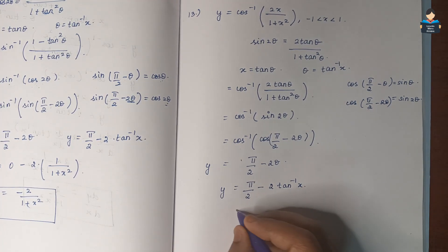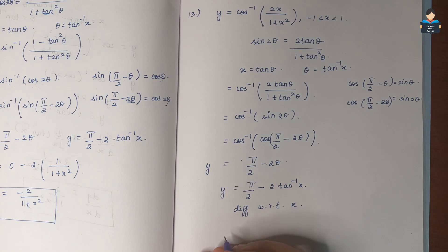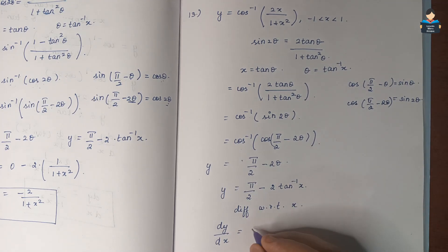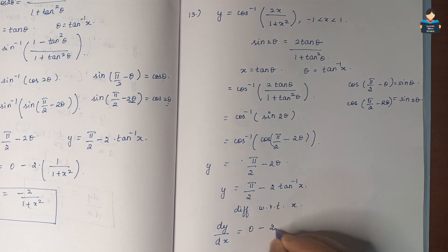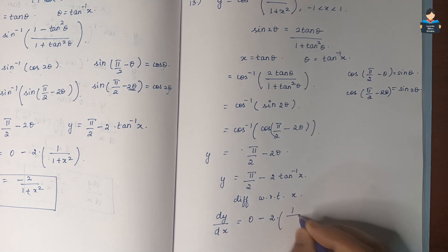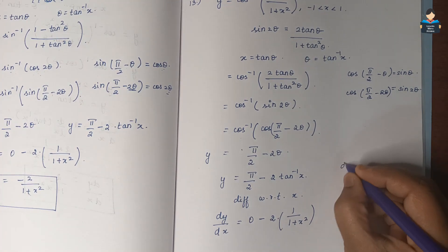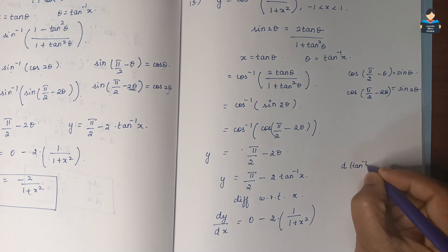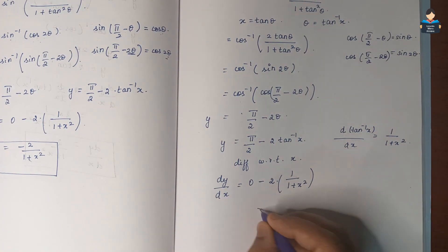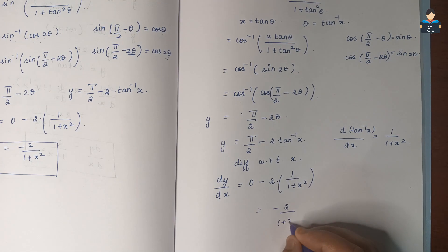Now we differentiate with respect to x. So dy/dx: π/2 is constant, so its derivative is 0, minus 2. The differentiation of tan inverse of x is 1 by 1 plus x square. So the answer is minus 2 by 1 plus x square.